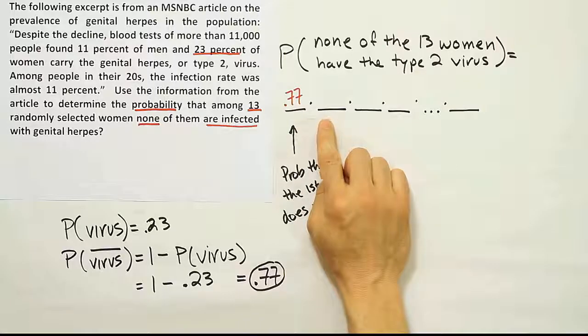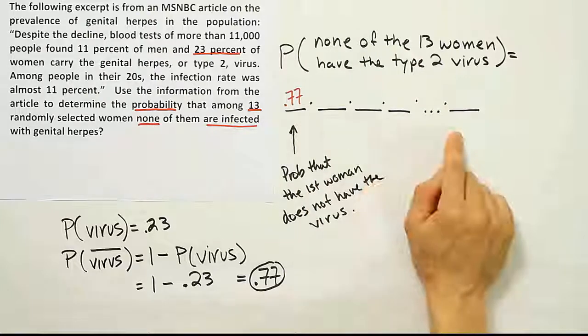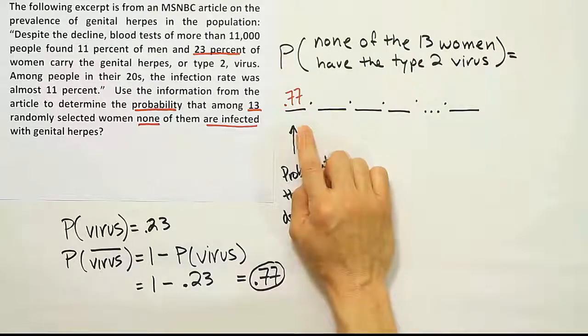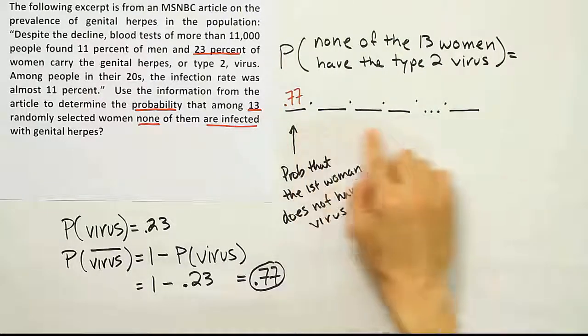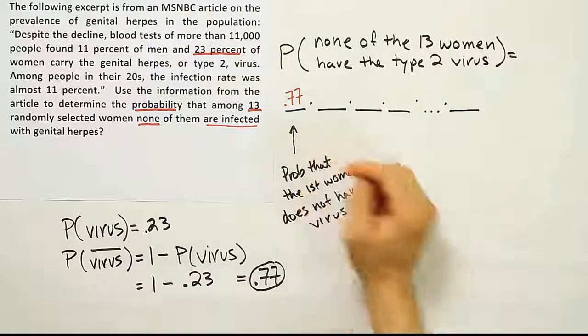Well, the reality is though, the sample of 13 is so small compared to the overall population of women that I can treat it as if it's independent, even if in fact it's not independent. That's because the sample size here is so small. So we don't have to worry about that issue of, you know, we wouldn't take the same woman twice, so therefore we're kind of sampling without replacement.